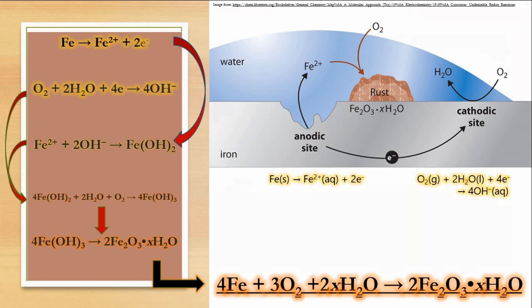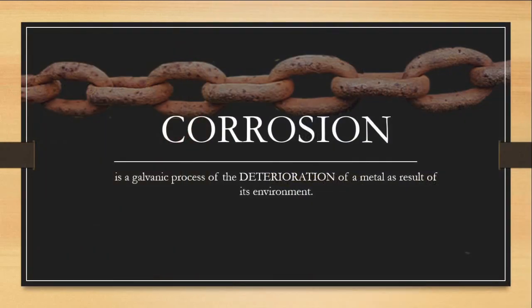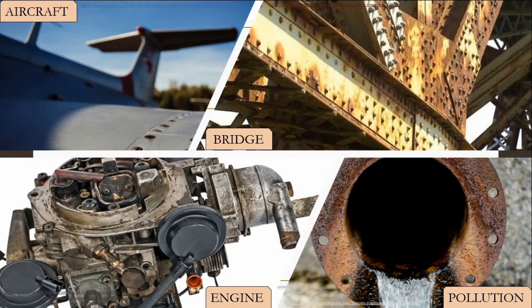So basically, corrosion is a galvanic process of the deterioration of a metal as a result of its environment. This leads to damage of material, infrastructures, machines, and release of harmful pollutants into the environment.